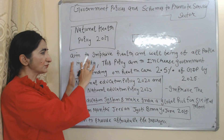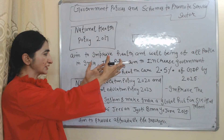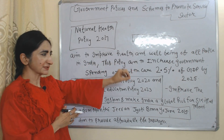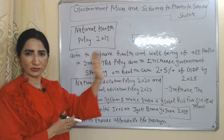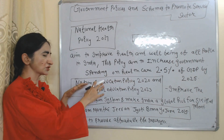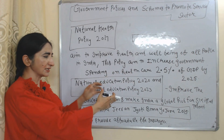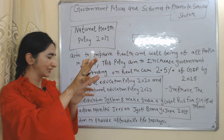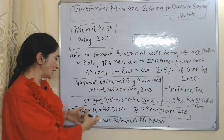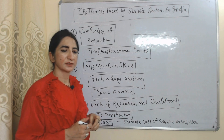The National Health Policy 2017 aims to improve the well-being of all people of India and to increase government spending on healthcare to 2.5% of GDP by 2025. The National Education Policy 2020 aims to improve the education system and make India a global hub for skilled talent. Pradhan Mantri Jeevan Jyoti Bima Yojana 2015 aims to provide affordable life insurance.